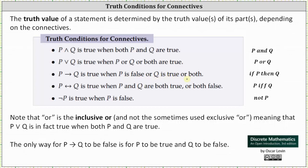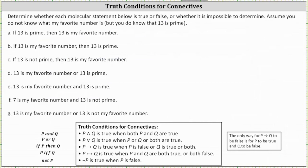Let's take a look at some examples. Determine whether each molecular statement below is true, false, or whether it is impossible to determine. Assume you do not know what my favorite number is, but you do know 13 is prime.